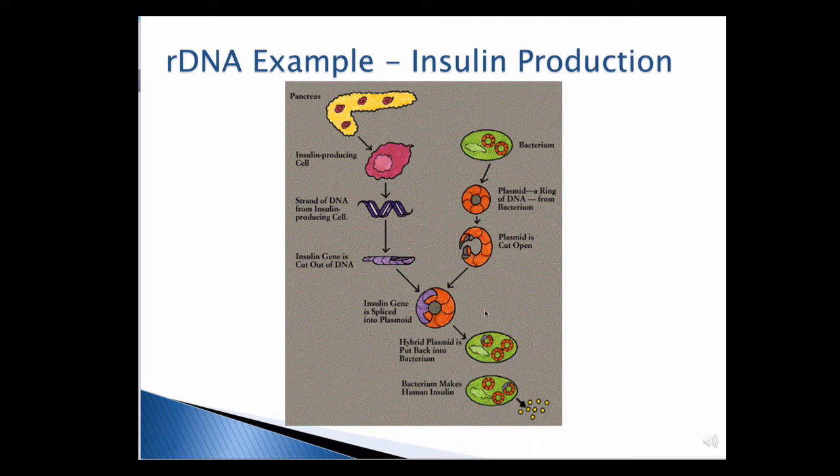Now, this bacteria with the recombinant plasmid will allow that gene that's in that plasmid to make insulin. You can then purify the insulin and then use it to treat patients.